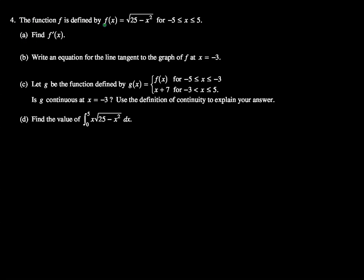It says the function f is defined by f(x) equals the square root of 25 minus x squared. So we have a semicircle for negative five less than or equal to x less than or equal to five.